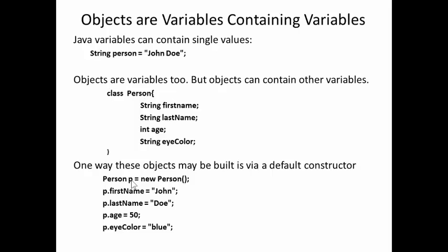Person p equals new Person. p is now a variable pointing to a new person object. At that point, there is no value associated with its four variables. But in the next four statements, I assign values. p dot firstName is assigned John. p dot lastName is assigned Doe. p dot age is assigned 50, etc.